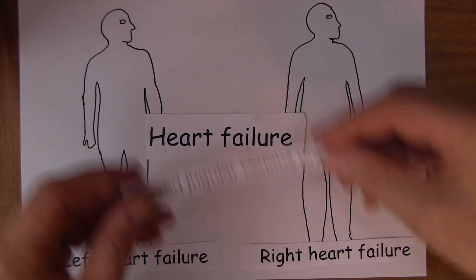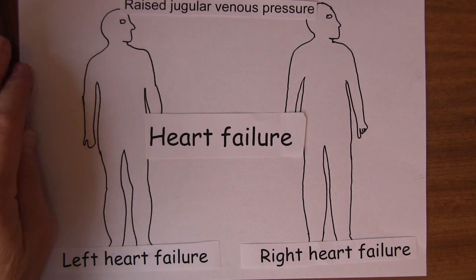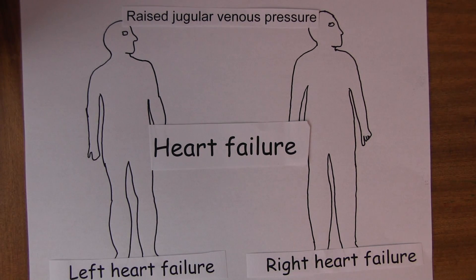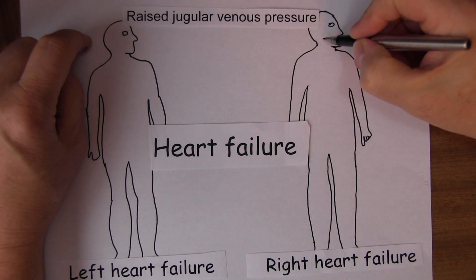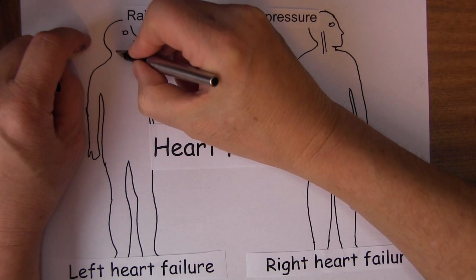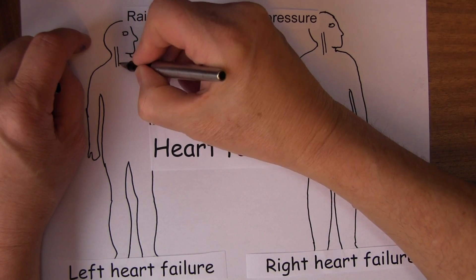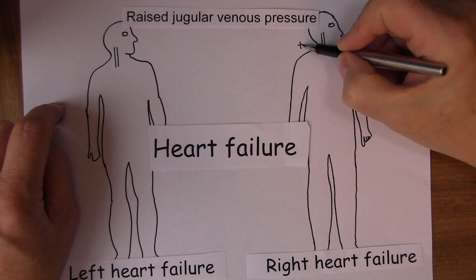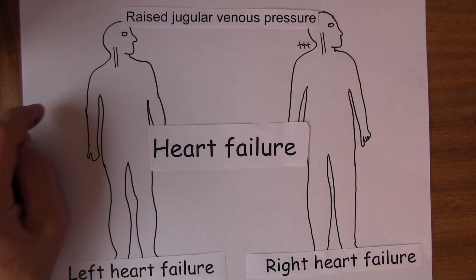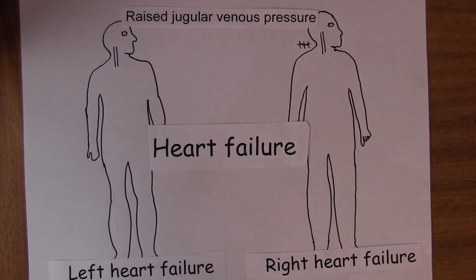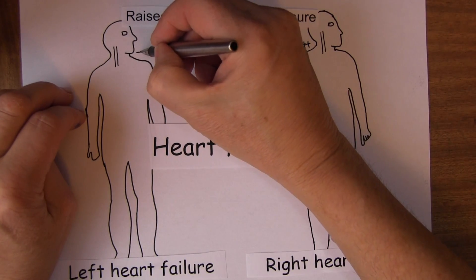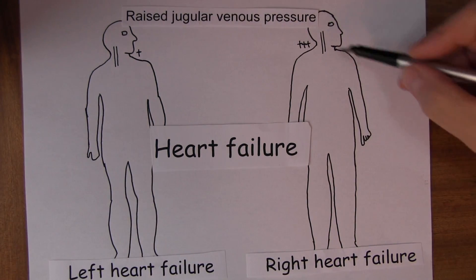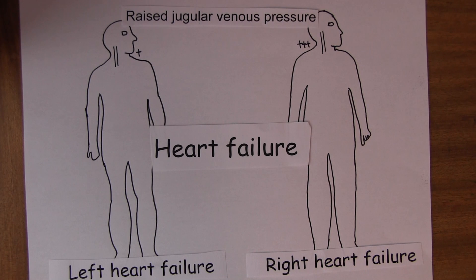Let's think first about the jugular venous pressure. We get the patient to turn their head to the right and we look at the jugular veins in the neck. If the jugular venous pressure is increased, that is a sign of heart failure, and this is particularly prominent in someone with right heart failure — very prominent jugular veins, increased jugular venous pressure. You can get it as well in predominantly left heart failure, but it's usually most pronounced in right heart failure.